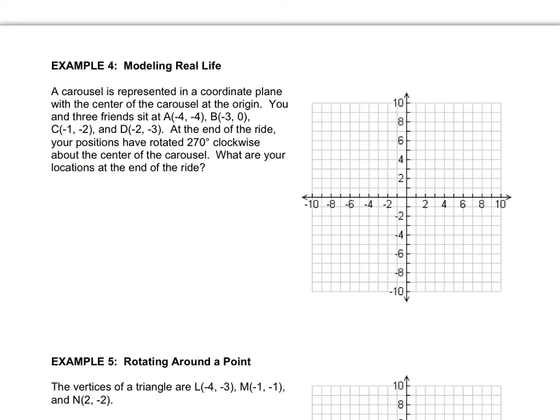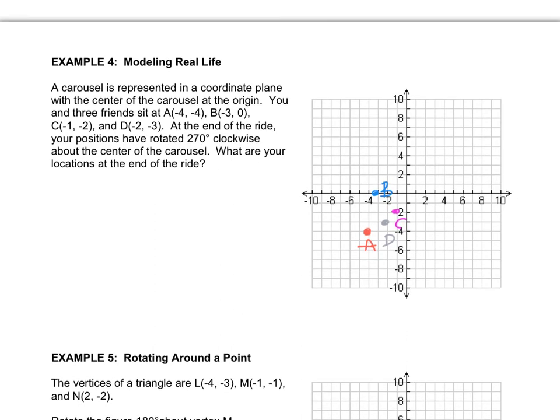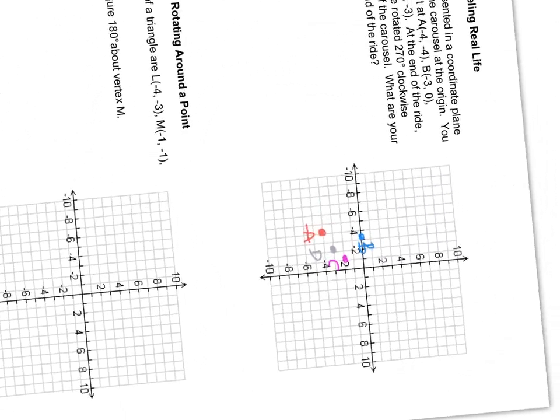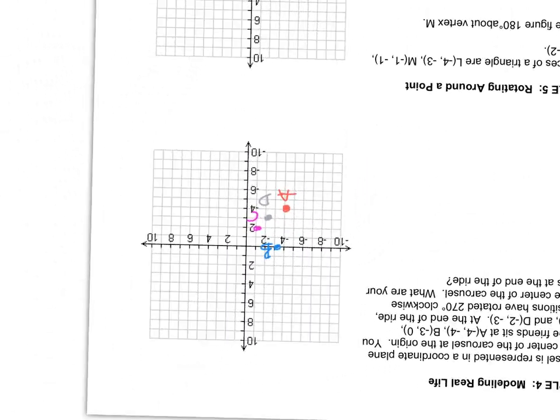I'd like you to read the story and plot the four points that represent you and your three friends. It says you and your friends have rotated 270 clockwise, and they want to know what your locations are at the end of the ride. So we're going to turn our paper 270 clockwise. So that is going to be three turns. So 1, 2, 3. Let's write down the coordinates.